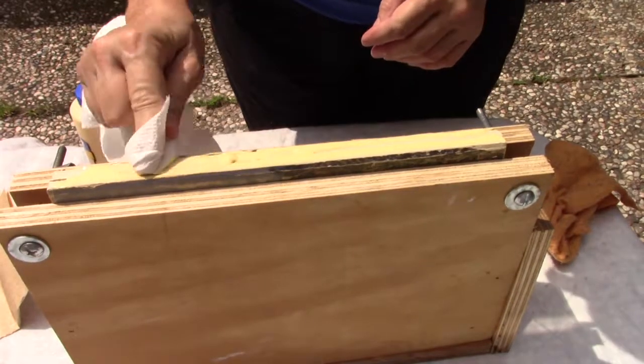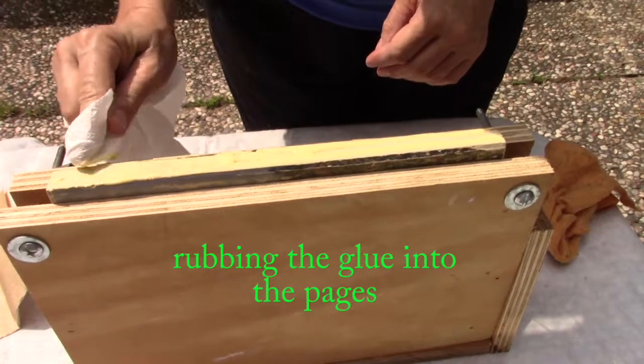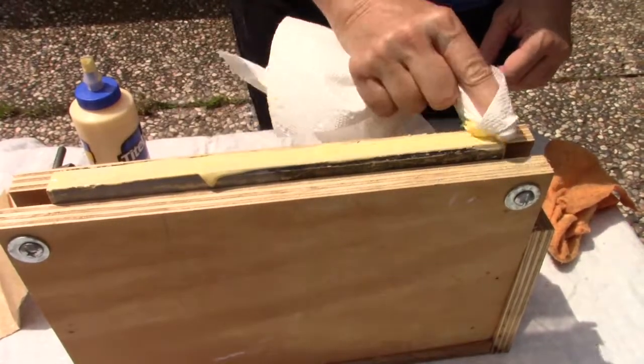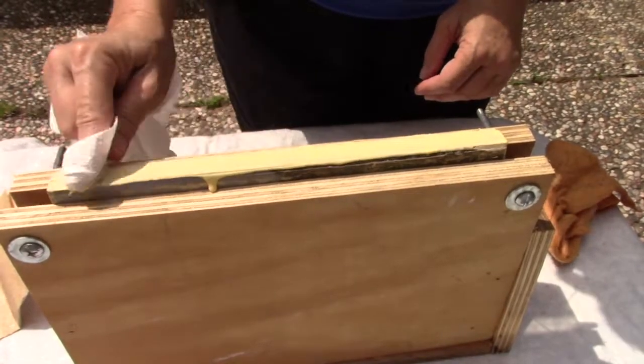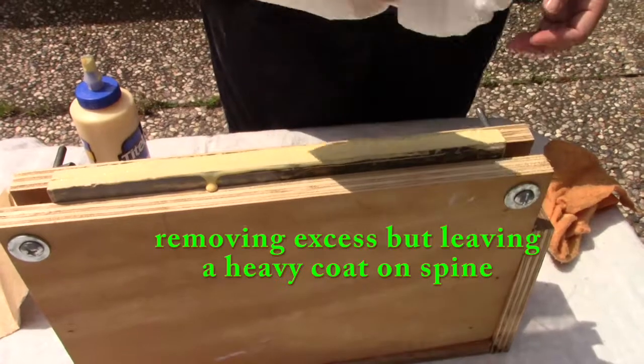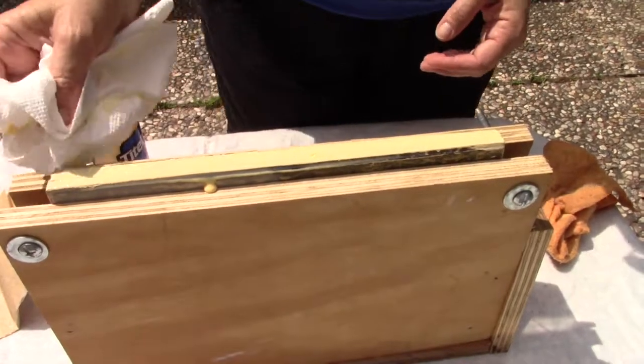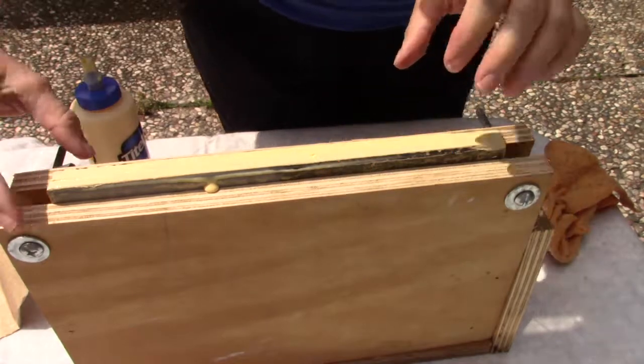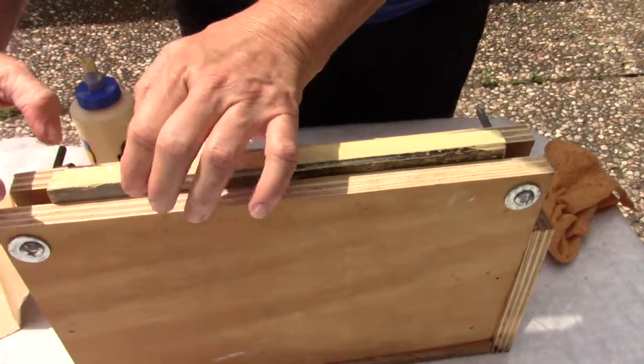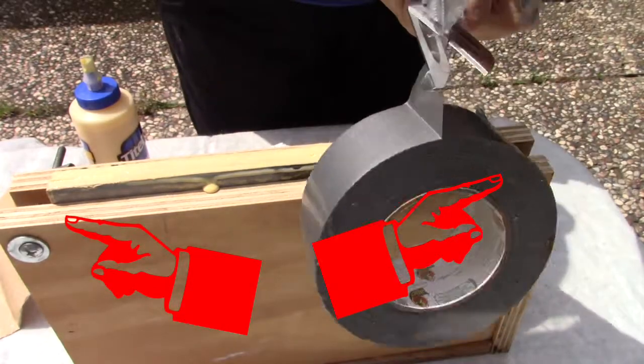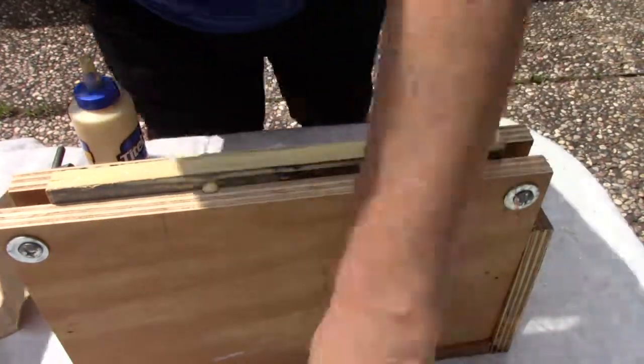The pages are going to be real dry and they should absorb the glue. So I'm going to rub it in really good. I'm going to remove the excess but leave a heavy coat on the top of the spine. You don't want clumps like this, though at this point it's not going to matter that much. But you don't want glue going on the top and the bottom because it'll glue your pages together. You don't want that.